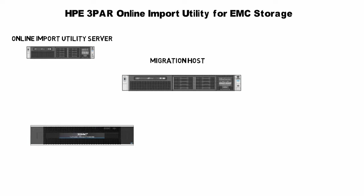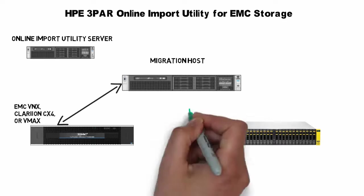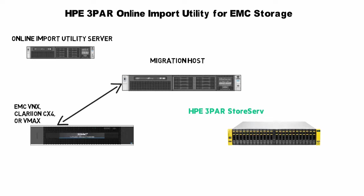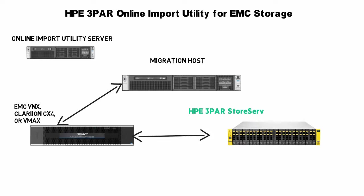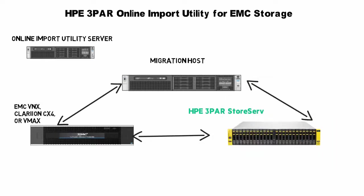Next is the EMC storage, and this can be VNX, Clariion, and most recently we added support for VMAX. Finally, the star of the migration is HPE 3PAR StoreServ. This is the picture of what your environment would look like before we begin the migration. The migration host is zoned to the EMC array, and our HPE 3PAR StoreServ uses its peer ports to the EMC array via the SAN to connect. It's an appliance-free migration, so you don't have to put some special piece of hardware in the middle to accomplish this. We then zone the migration host to the 3PAR array and remove the zoning between the host and the EMC array.